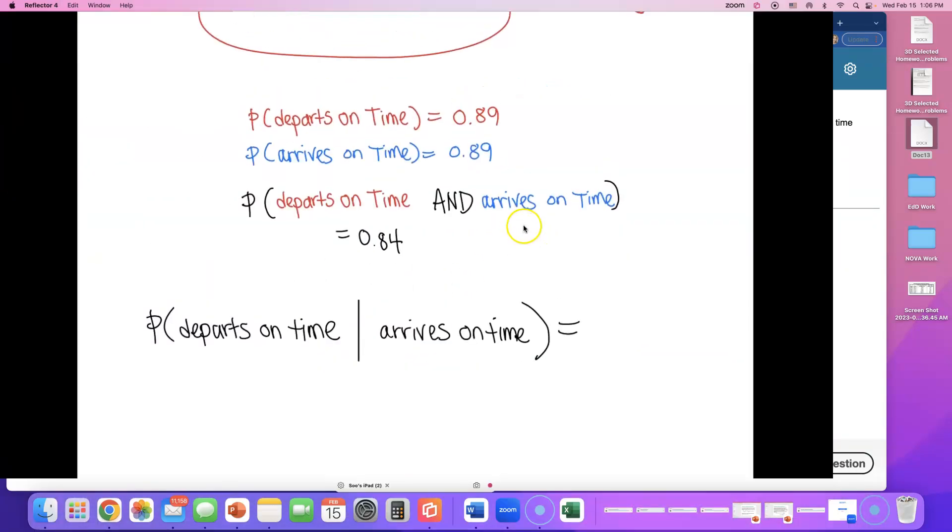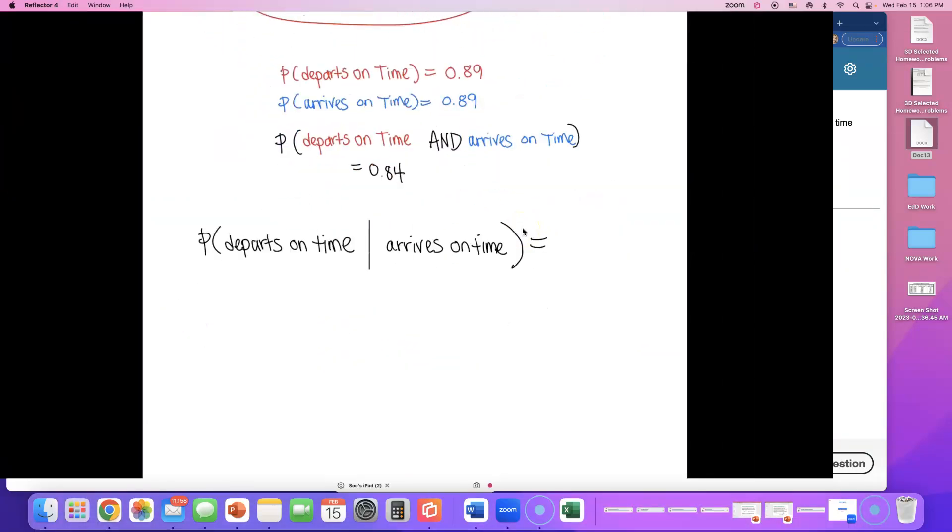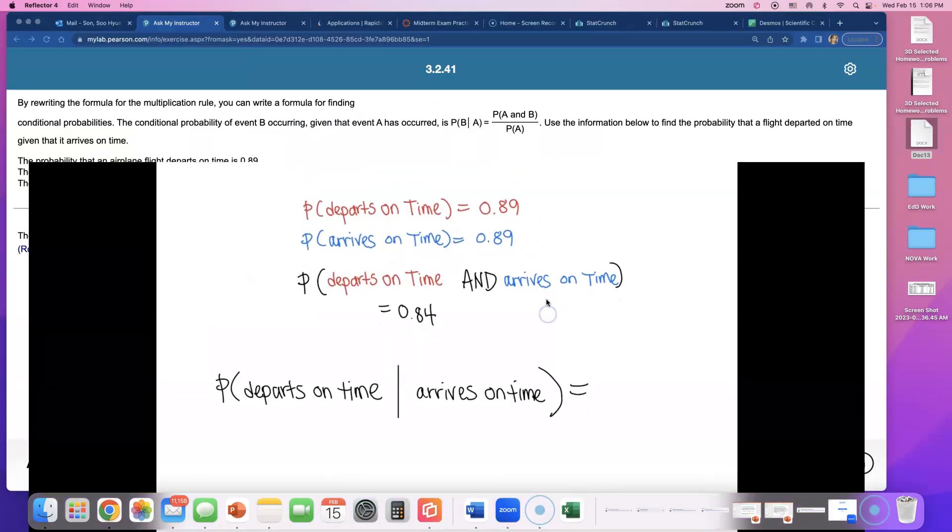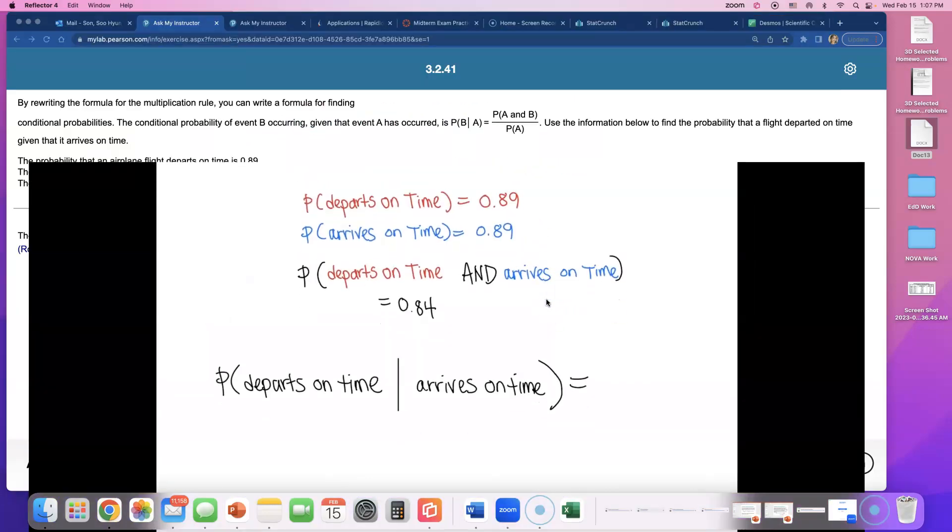Let's go find that for them. Gotta use that formula they gave us. The formula is, if you want to find this out, then you put the probability of both happening at the same time divided by probability of the second part: arrives on time.